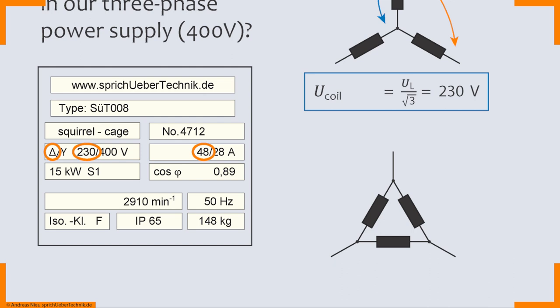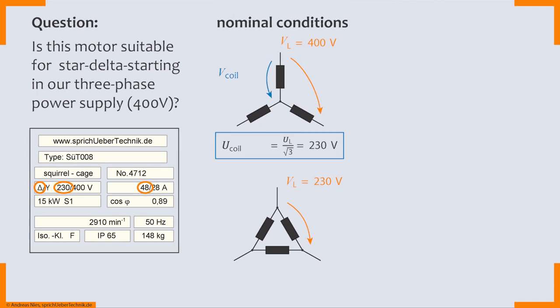For delta connection we need to use the first value respectively. Hence with the delta connection the nominal face-to-face voltage is 230 volts. I also put that there for you and now again the question what does this mean for the coil voltage. Well that's actually very easy. At each coil there's going to be the face-to-face voltage. So coil voltage equals face-to-face voltage equals 230 volts.